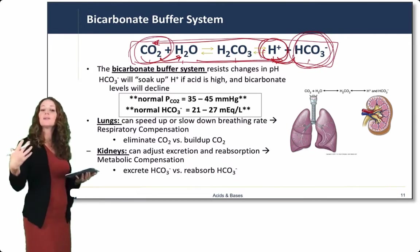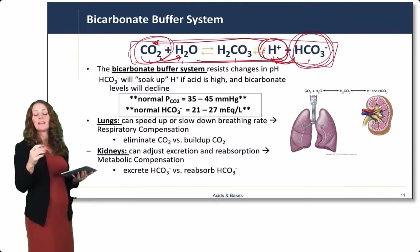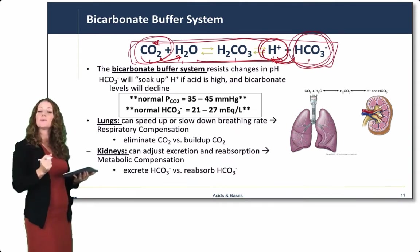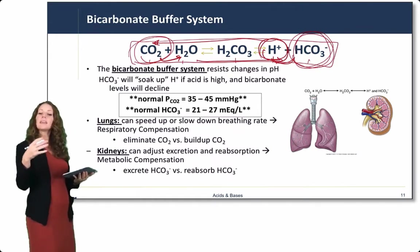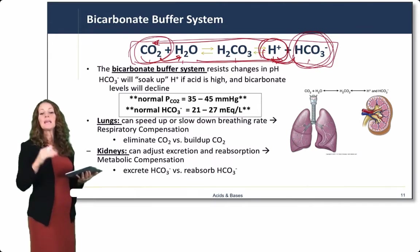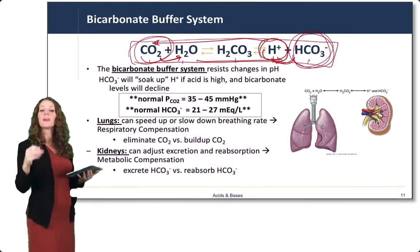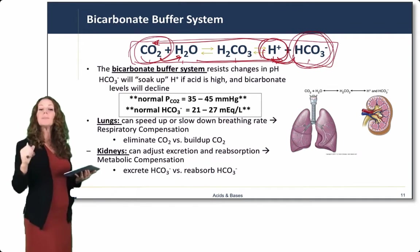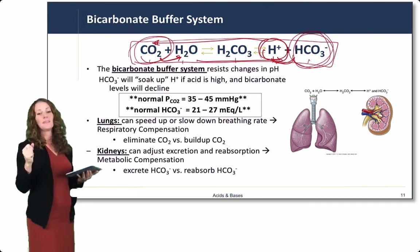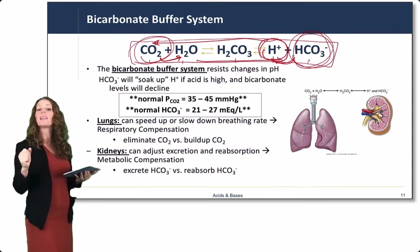Lungs can speed up or slow down the breathing rate as respiratory compensation. If lungs increase their respiratory rate, they can eliminate more CO2. If lungs decrease their respiratory rate, they can build up CO2. Eliminating CO2 effectively eliminates acid from the body. Building up CO2 effectively builds up acid and can help to balance an alkalotic state.